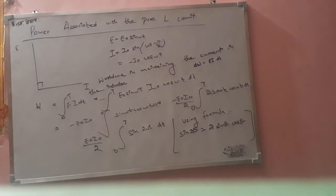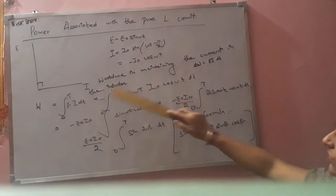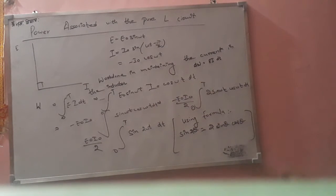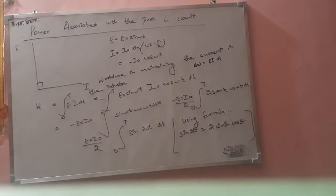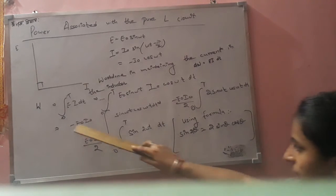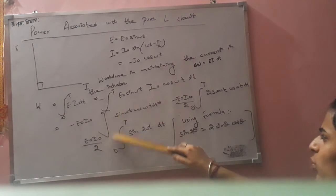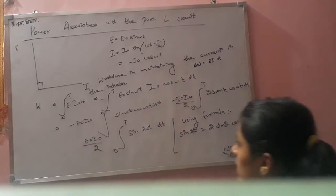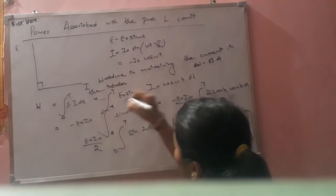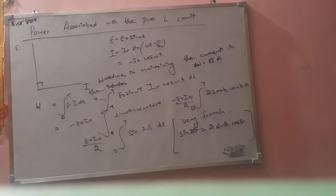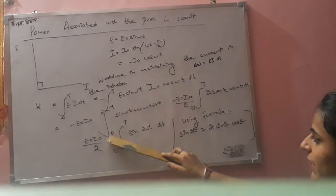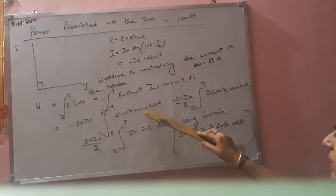Now we substitute: E is equal to E-naught sin(omega-t), and I is equal to minus I-naught cos(omega-t). So the work done becomes: minus E-naught·I-naught times the integration from 0 to T of sin(omega-t)·cos(omega-t)·dt.